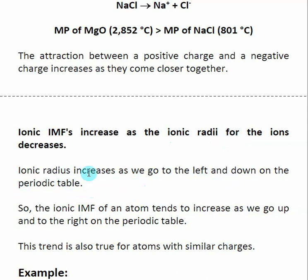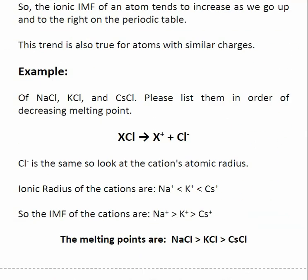We want smaller ionic radii to increase the strength of our intermolecular force. The ionic intermolecular force of an ion increases as we go up and to the right on the periodic table. So if I have two species to compare, the smaller one will form the stronger intermolecular force, and the smaller one is the one further up and to the right on the periodic table. Let's look at an example.